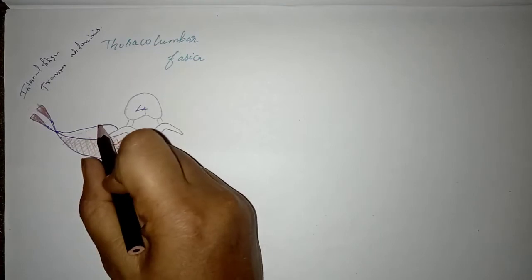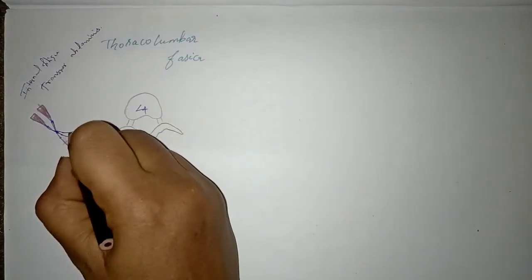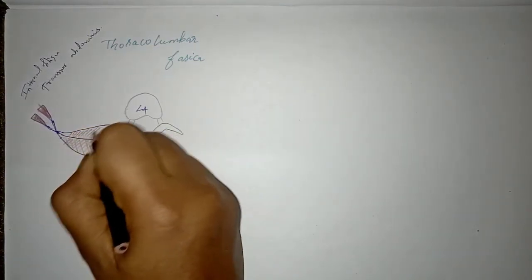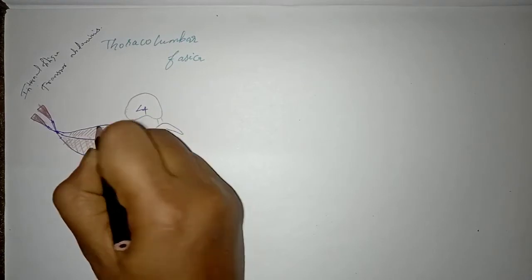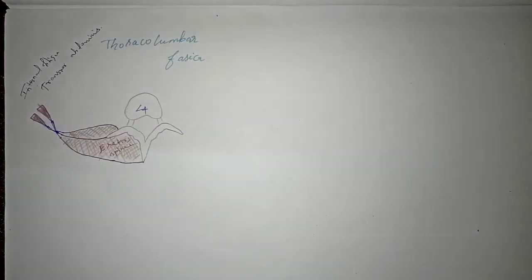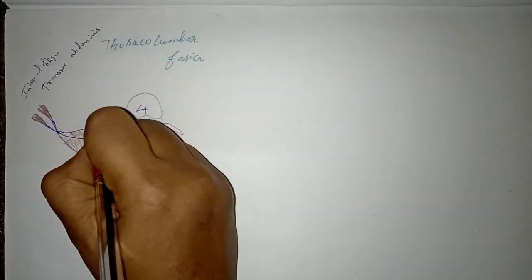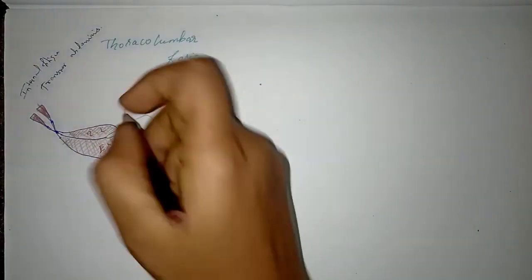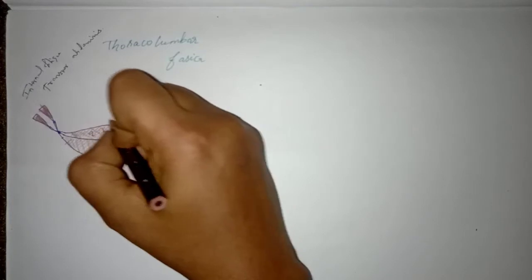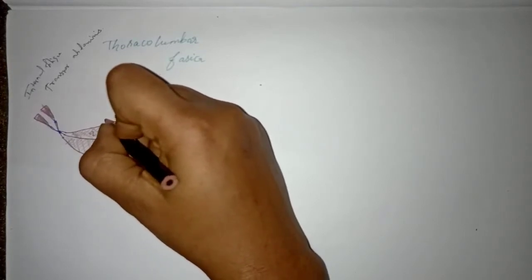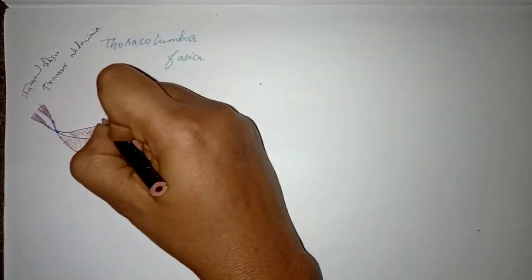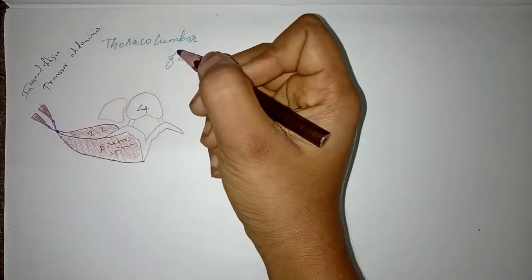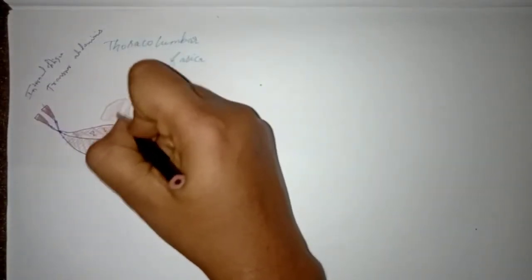In between the middle layer and the anterior layer, there is another muscle. At the L4 vertebra, this is the attachment of the psoas major muscle.